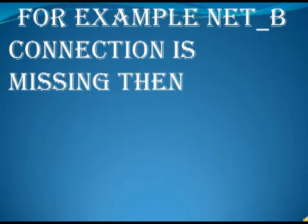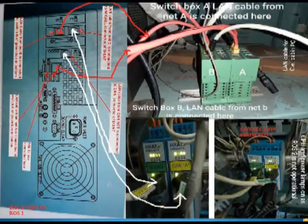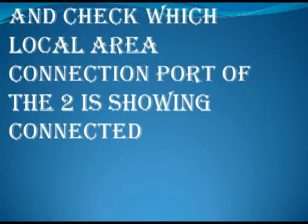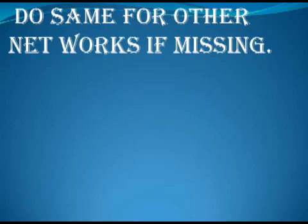For example, if the Net B connection is missing, connect the Net B cable to the bottom port of the dual-port card in the back of the ROS1 PC with the switch box, and check which local area connection port is showing as connected. The one showing connected will be the Net B port — rename it to Net B. Do the same for other networks if they are missing.